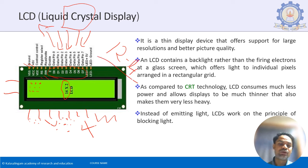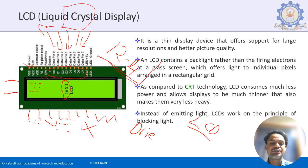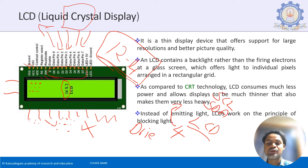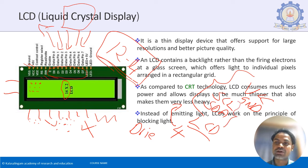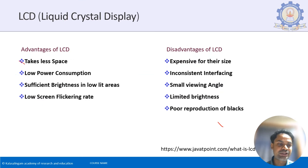To reduce the LCD's 14 pins down to just 4, you can use an LCD I2C driver module. This driver uses the I2C protocol — SCL, SDA, VCC, and ground — allowing data to be transferred serially. Advantages of LCD include low space usage, low power consumption, sufficient brightness adjustable by a potentiometer, and very low flickering rate.